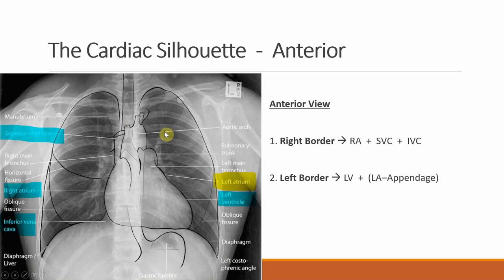To start, we need to know the cardiac silhouette — just the basic outline of the heart. There are two ways to analyze this silhouette: the anterior view and the lateral view. In the anterior radiograph, I have illustrated the important borders in turquoise. We can split the borders into right and left. The heart should be 50% or just under 50% of the total diameter of the thoracic wall.